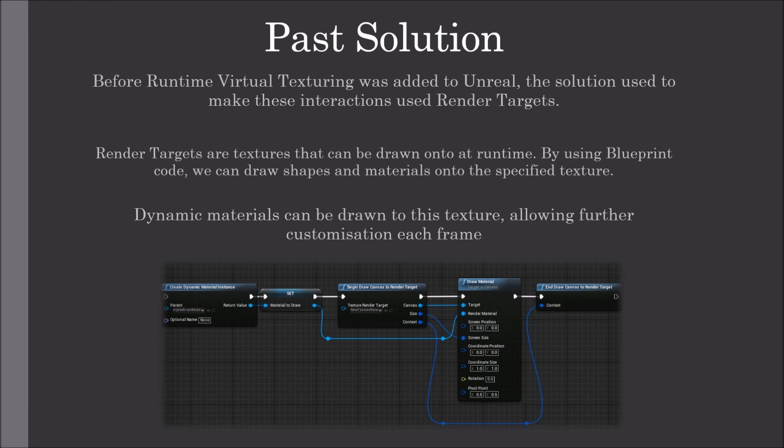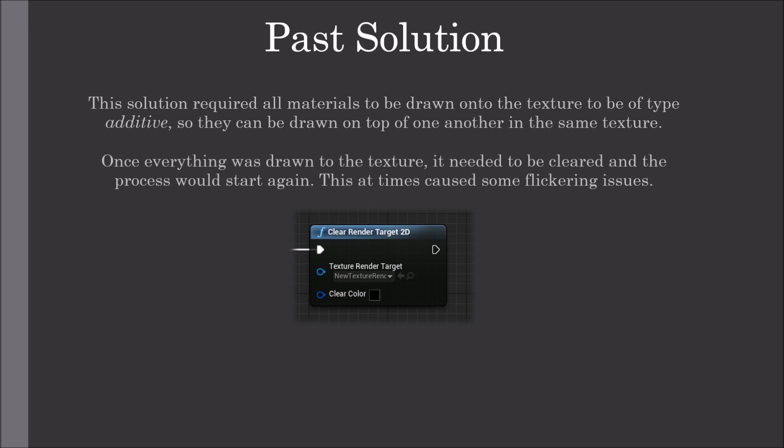Dynamic materials can be drawn to this texture, allowing further customization each frame. This solution required all materials drawn onto the texture to be of type additive, so they can be drawn on top of one another in the same texture. Once everything was drawn onto the texture, it needed to be cleared and the process would start again. This at times caused some flickering issues if performed each frame.